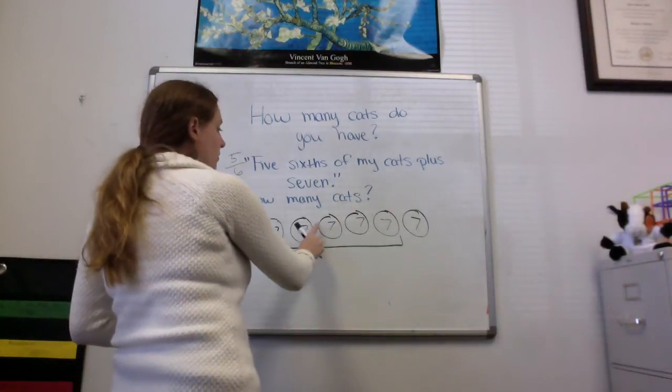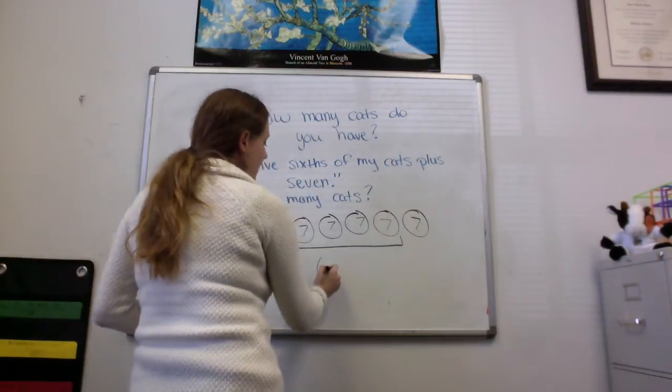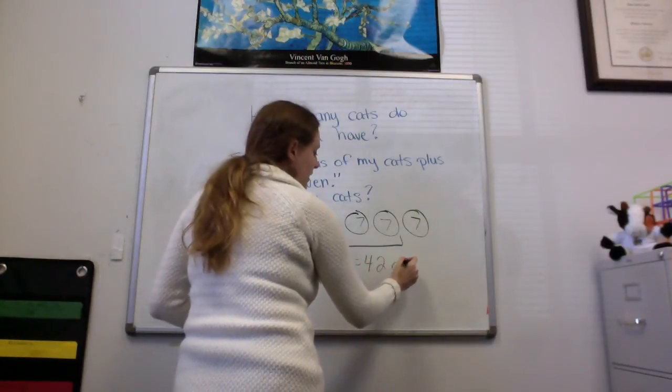So that means I have 1, 2, 3, 4, 5, 6 groups of 7, which equals 42 cats.